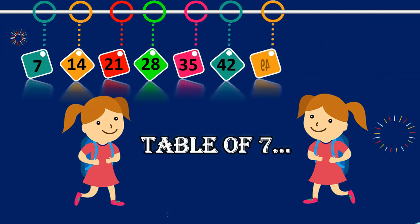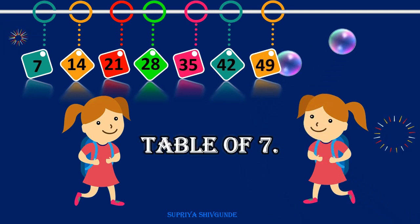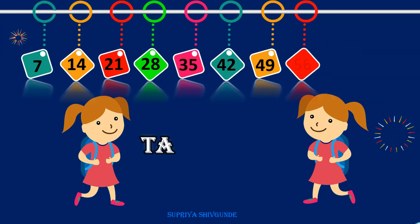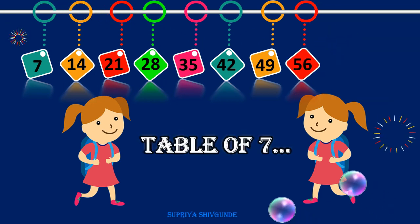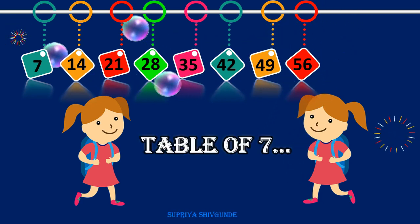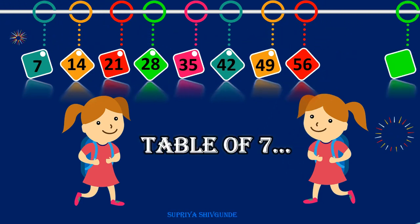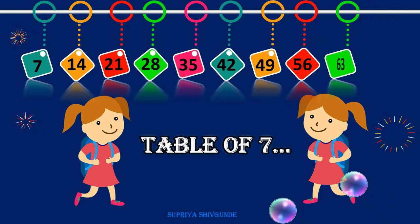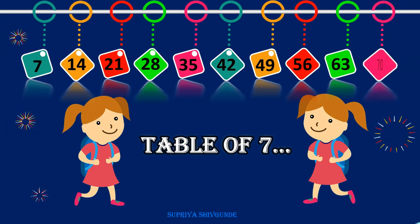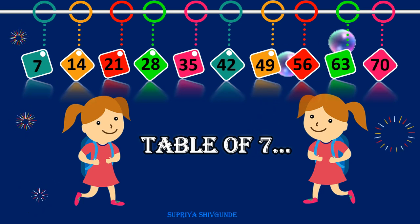Seven sevens are forty-nine, seven sevens are forty-nine. Seven eights are fifty-six, seven eights are fifty-six. Seven nines are sixty-three, seven nines are sixty-three. Seven tens are seventy, seven tens are seventy.